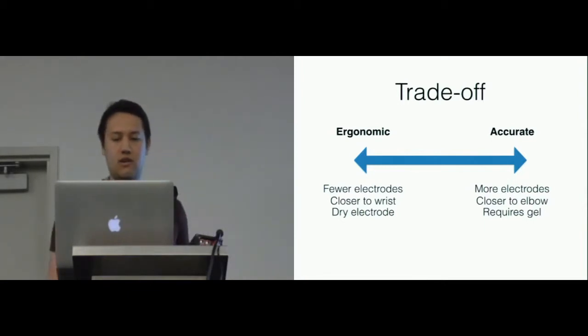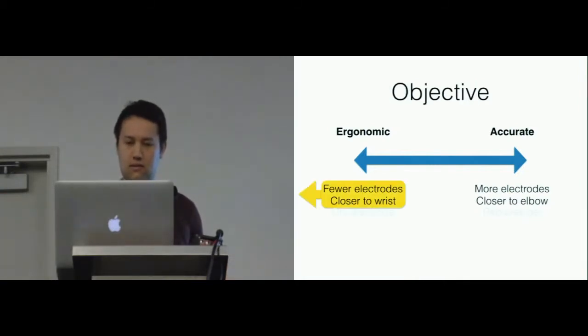So we have this trade-off between ergonomics and accuracy, and the variables are shown here which contribute to each end of the spectrum. Our objective is to find out what this trade-off in accuracy is with a focus on changing these two variables so that it's on the wrist and it's ergonomic.